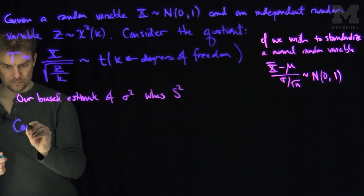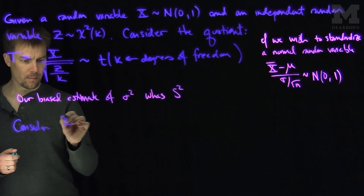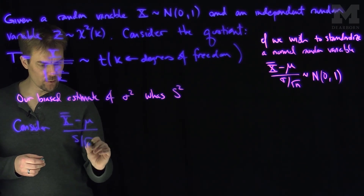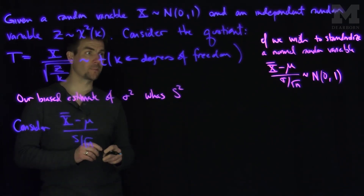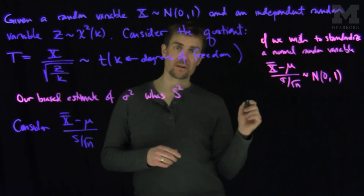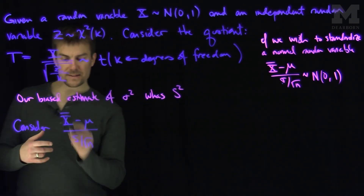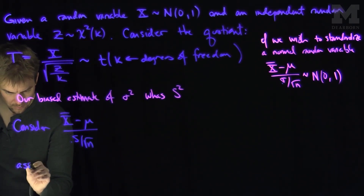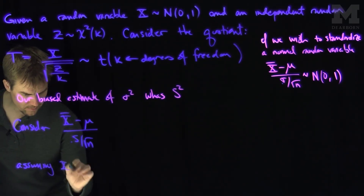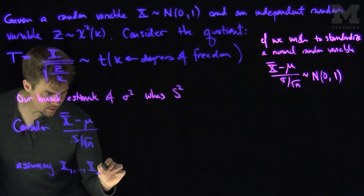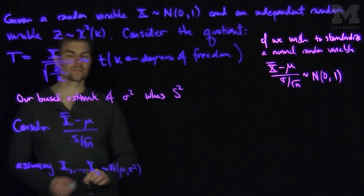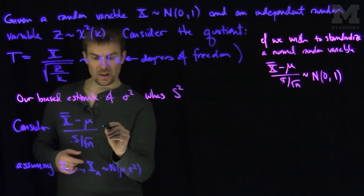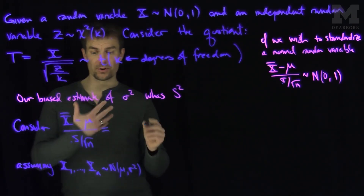Let's consider x̄ minus mu over s over the square root of n. I replace sigma with s — my population standard deviation with my unbiased estimate s. I'd like to know what this distribution is, assuming x₁ through xₙ are normally distributed with mean 0 and variance sigma squared. I can algebraically manipulate this and make the top into a Normal(0,1) random variable.